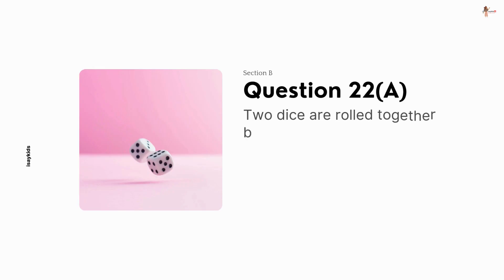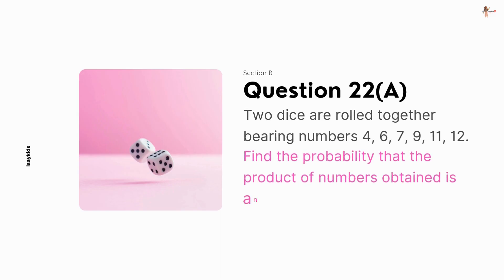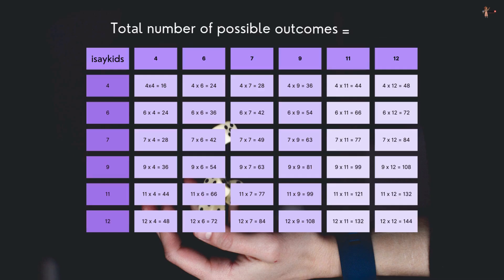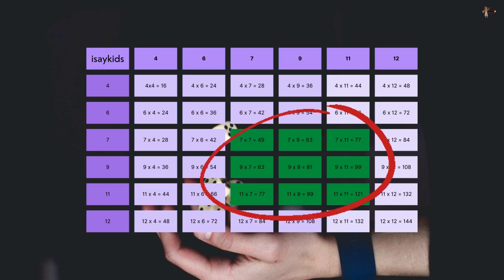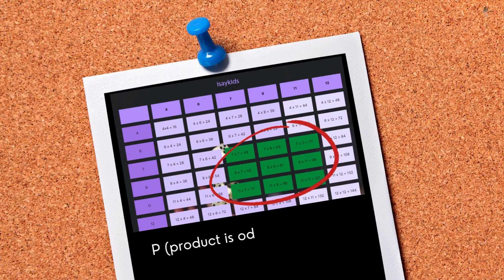Two dice are rolled together bearing numbers 4, 6, 7, 9, 11, and 12. Find the probability that the product of numbers obtained is an odd number. Total number of possible outcomes is 36. Favourable outcomes would be the product of an odd and an odd number, so 9. The probability would be 9 upon 36, that is 1 by 4.